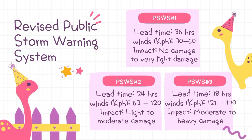Revised public storm warning system: PSWS #1 — lead time of 36 hours, wind speed of 30 to 60 kilometers per hour, impact: no damage to very light damage. PSWS #2 — lead time of 24 hours, wind speed of 62 to 120 kilometers per hour, impact: light to moderate damage.